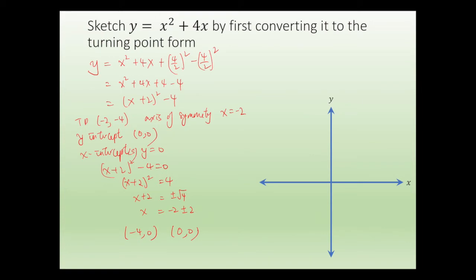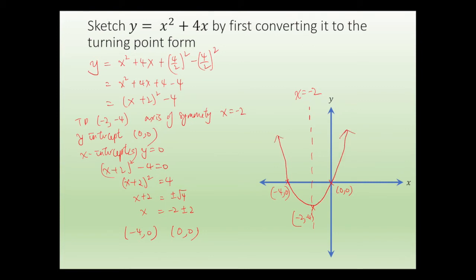With this information, we can sketch the graph. The axis of symmetry is x equals minus 2. The turning point is (minus 2, minus 4). The x-intercepts are (0, 0) and (minus 4, 0), and there's a y-intercept at (0, 0) as well. We can then sketch the parabola and label it y equals x squared plus 4x.